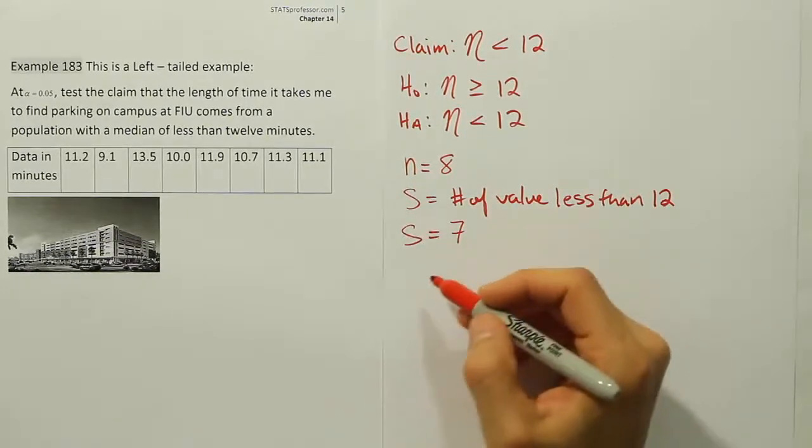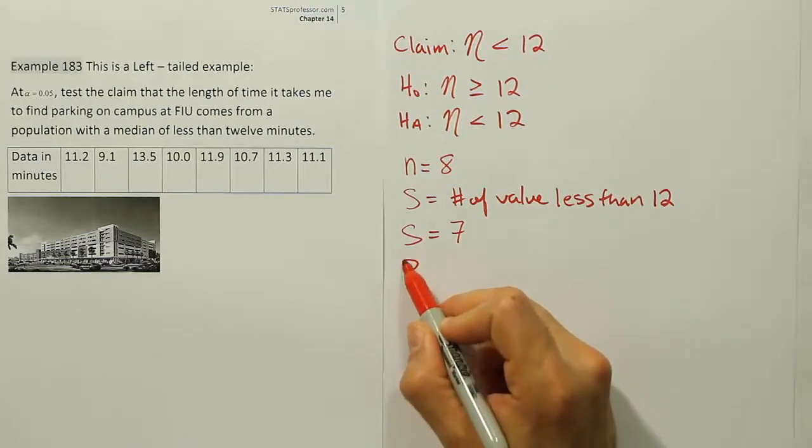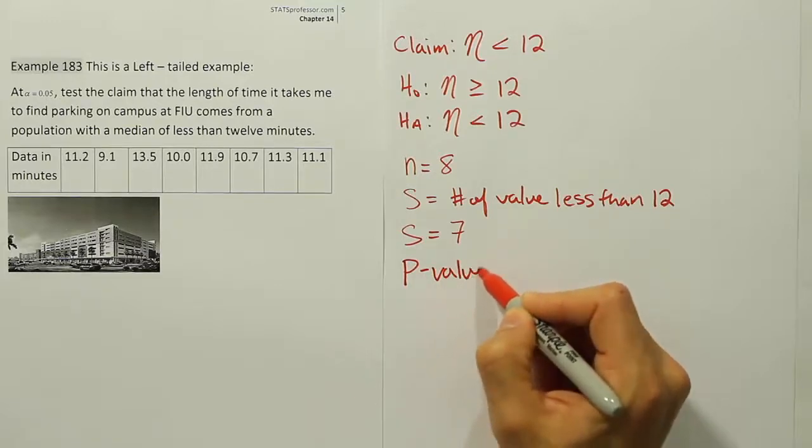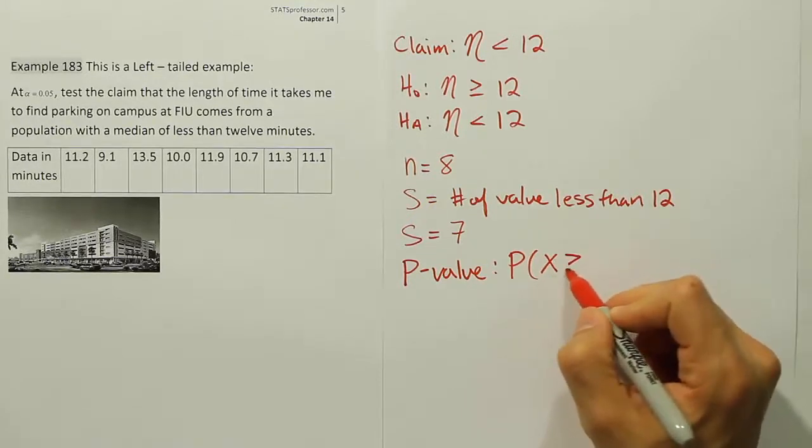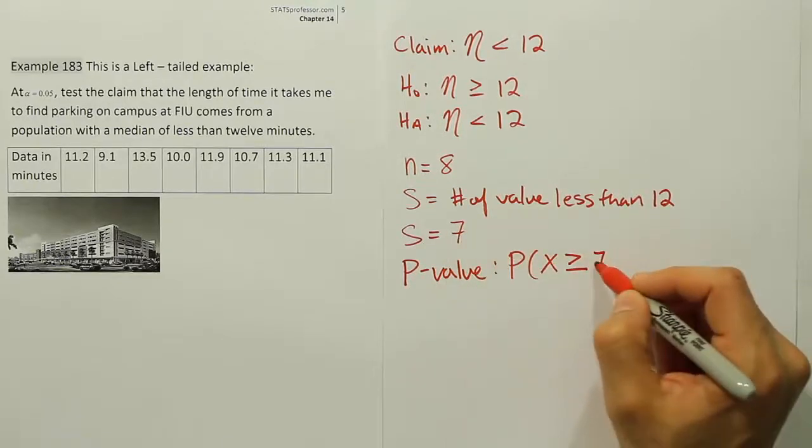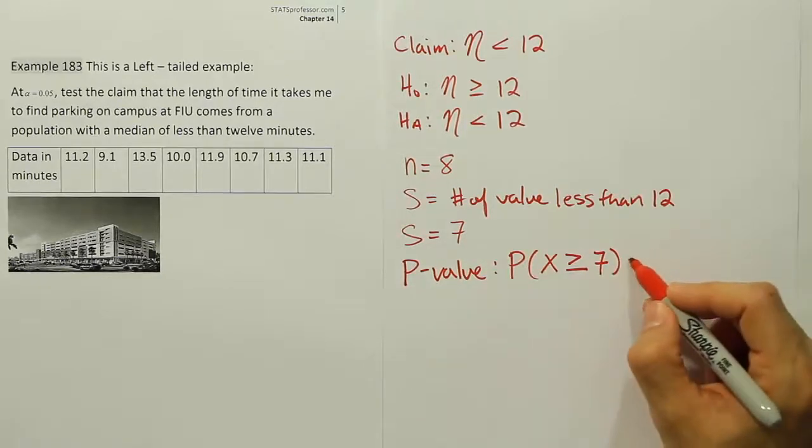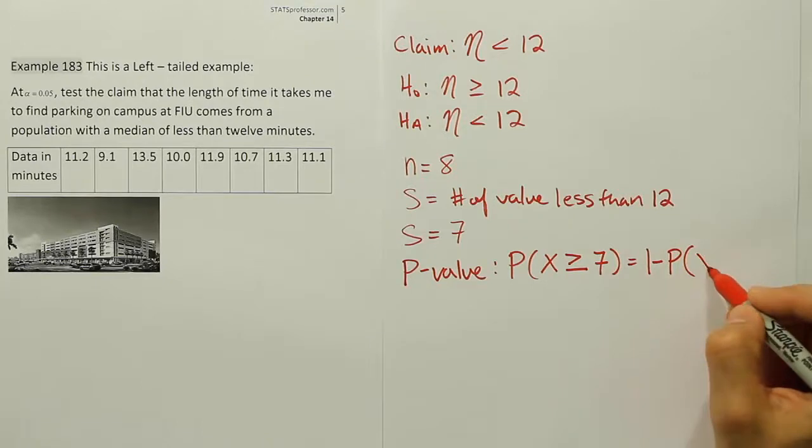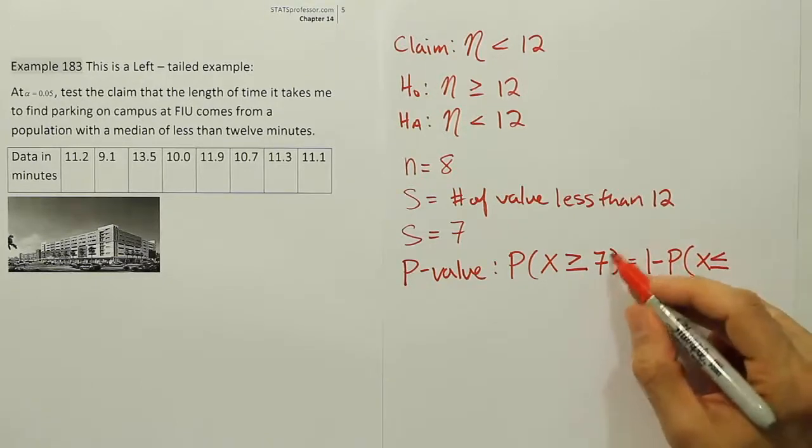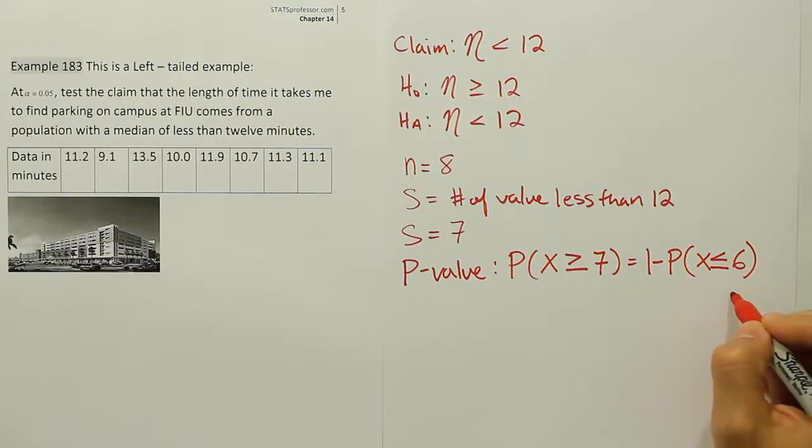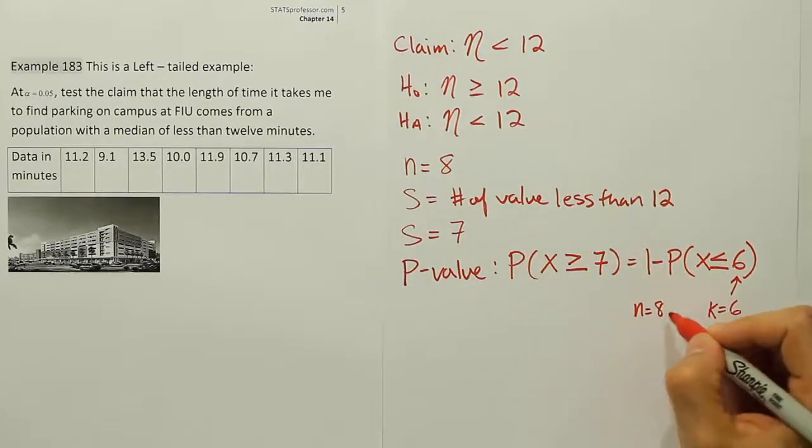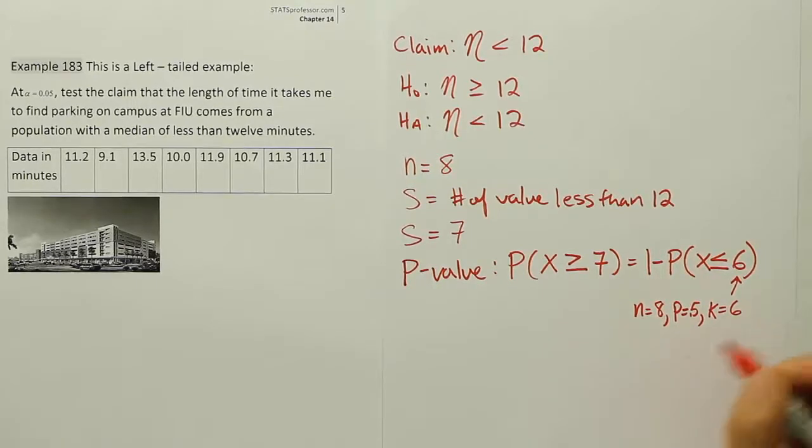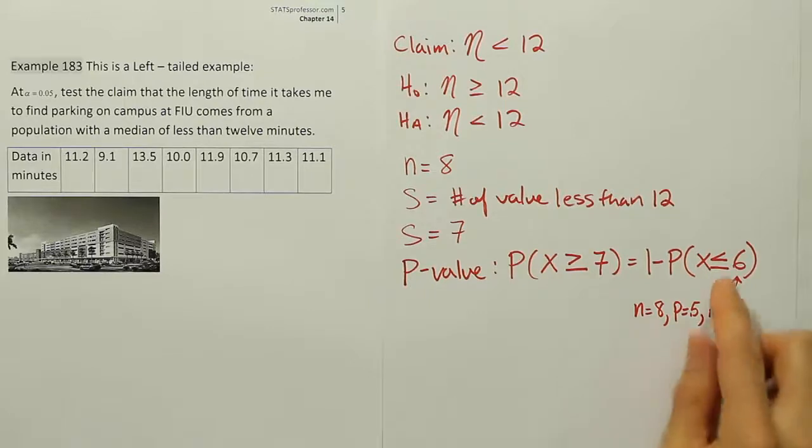Now once you have S is equal to 7, we do the p-value. You'll have to look at the previous videos to see why the p-value is what it is. I'm just going to actually work it out here for us. Let's write out the p-value. Remember, it's the probability that a binomial random variable with p equals to 0.5 is greater than or equal to this number that you have here, which in this case is 7. And that will always work out to be 1 minus the probability of x being less than or equal to one number less than this, which is 6. This number becomes our k for our binomial table. So k is equal to 6. The n we found before, the n is 8. And then we always use p is equal to 0.5.